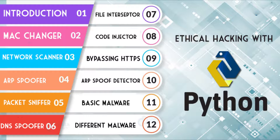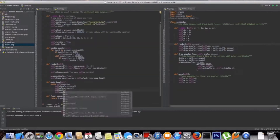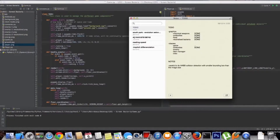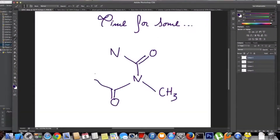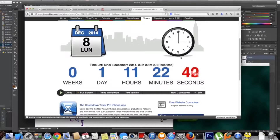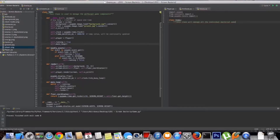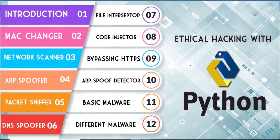Rather than creating 200 videos on Python basics teaching variables and console stuff that will bore you, in this course from the start we will create useful tools and learn Python by building exciting real-world applications. By the end of this course you will have 12 to 15 ready-made applications you built yourself that can be used for ethical hacking.